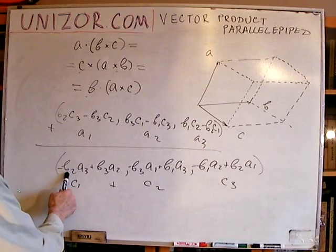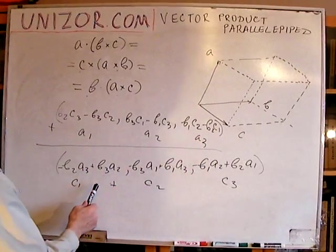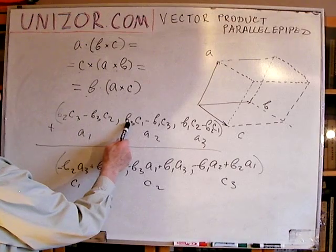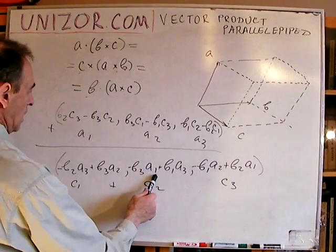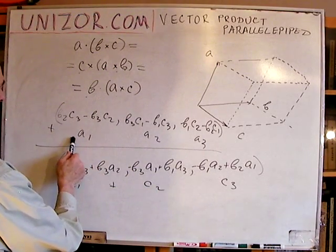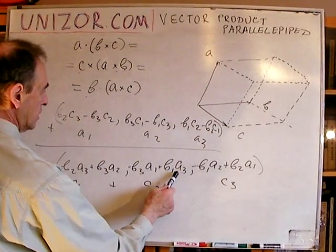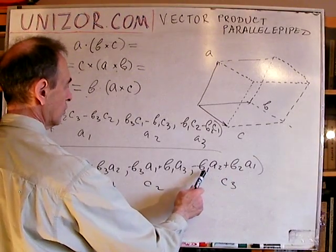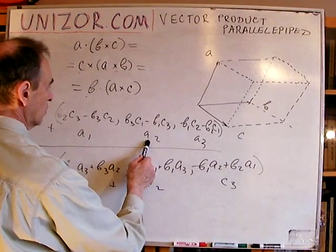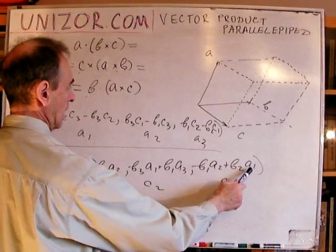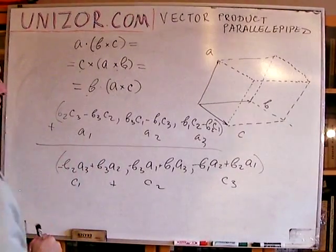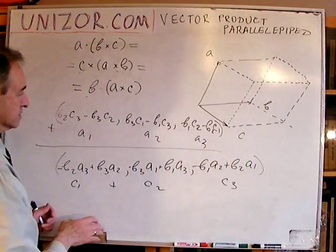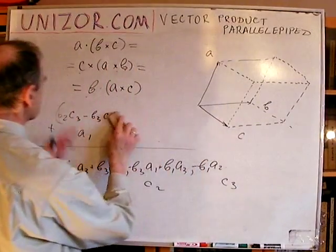Checking term by term: A3·B2·C1 appears with a minus in both; A2·B3·C1 appears with a plus in both; A1·B3·C2 appears with a minus in both; A3·B1·C2 appears with a plus in both; A2·B1·C3 appears with a minus in both; and A1·B2·C3 appears with a plus in both. So everything matches — the signs are consistent, and the same holds for the other equality. This part is straightforward; just make sure you don't mix the signs.